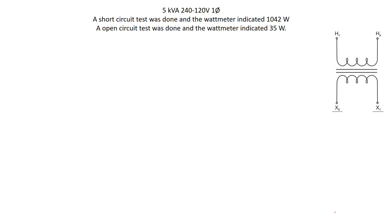We have a 5kVA 240 to 120 single phase transformer. We did a short circuit test on it, and during the short circuit test the watt meter indicated 1042 watts. In the short circuit test, we hardly had any voltage applied to make rated current flow through the secondary, and the watt meter on the primary read the copper losses — both primary and secondary combined. We also did an open circuit test and the watt meter indicated 35 watts. On the open circuit test, we put rated voltage on it with no load on the secondary, and that 35 watts is the core losses.